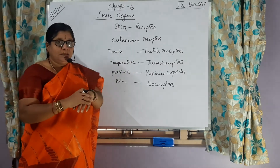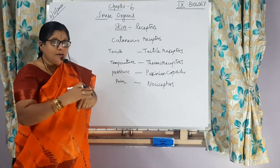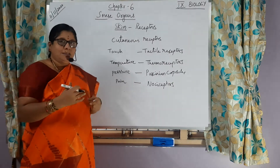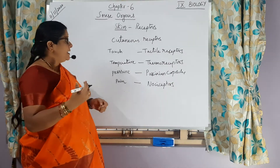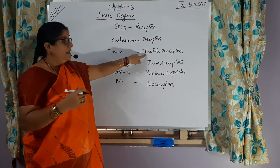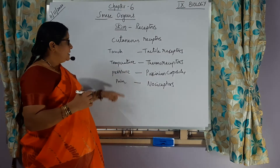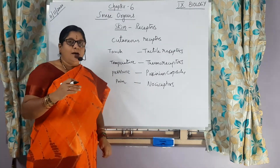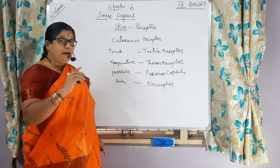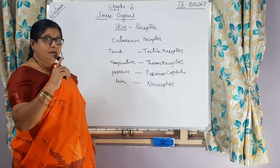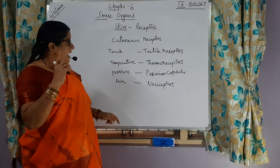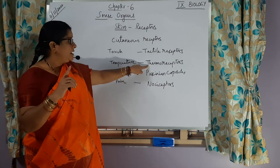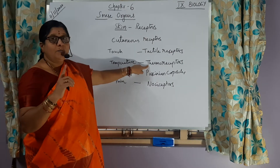When somebody touches us or something falls on us, we immediately show a response — that is because of tactile receptors. For temperature, hot and cold is identified because of thermoreceptors only. Up to 35 degrees centigrade they serve as cold receptors; beyond 35 degrees they change to hot receptors.